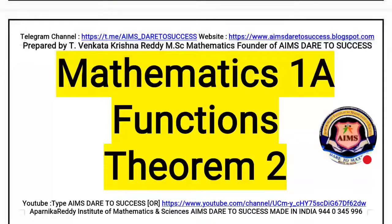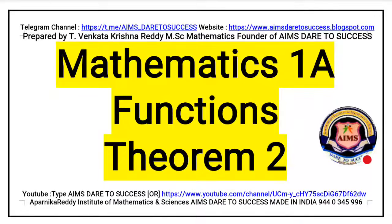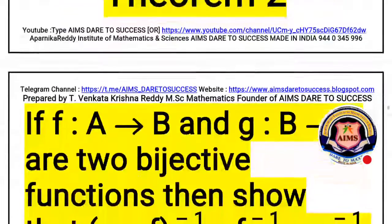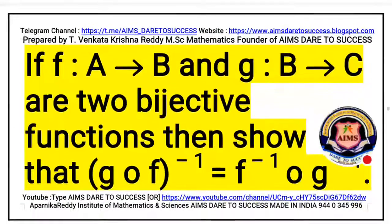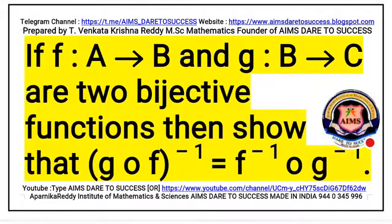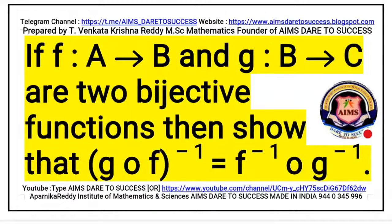Hi, hello, namaste, my dear students, welcome back to LIM's Dare to Success YouTube channel. Today we are discussing Mathematics 1A Functions Chapter Theorem 2. Theorem 2 is a very easy and important theorem. The theorem statement is: if F is a mapping from A to B and G is a mapping from B to C are two bijective functions, then show that G circle F whole inverse is equal to F inverse circle G inverse.